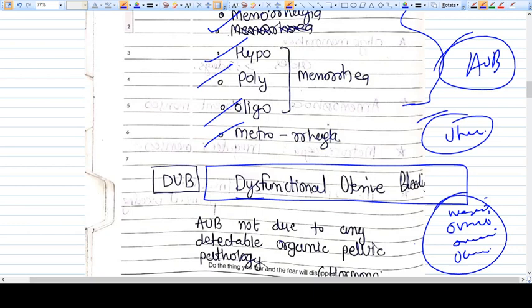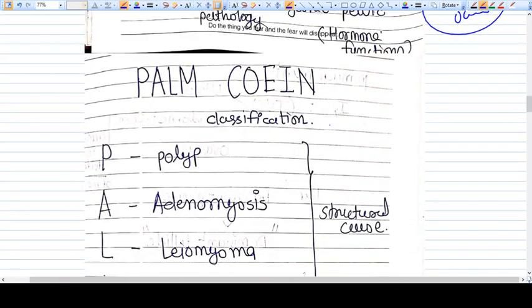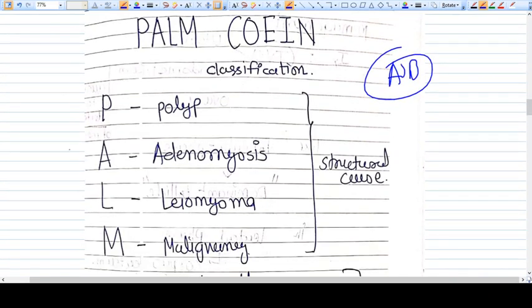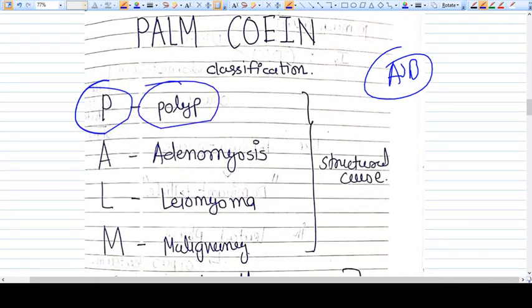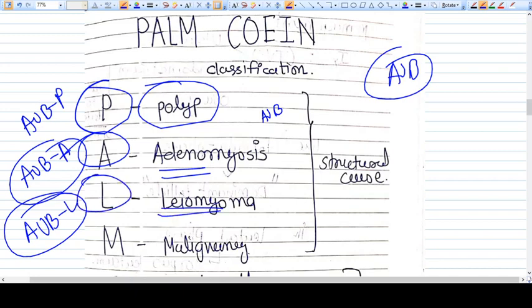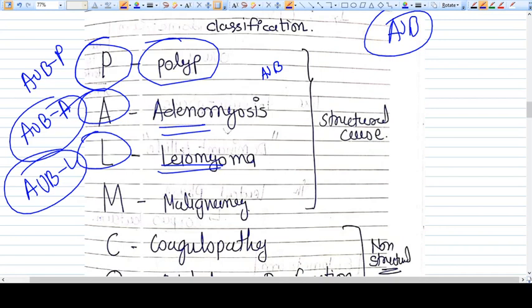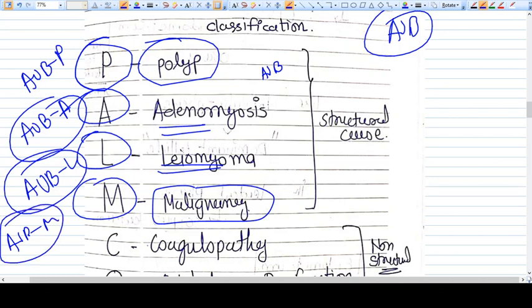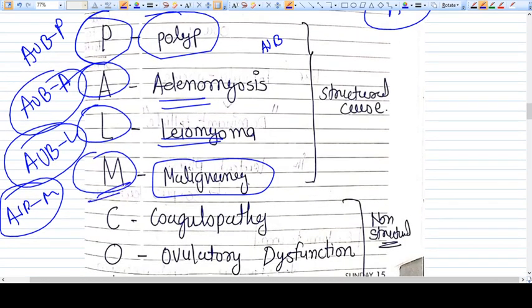There is a classification called PALM-COIN classification for AUB. It's very easy if you remember PALM: P means polyp, the polyp is a reason for abnormal uterine bleeding called AUB-P. A means adenomyosis, the bleeding is due to adenomyosis. L is leiomyoma, and M is malignancy - AUB-M due to some malignancy, endometrial carcinoma, or even benign endometrial hyperplasia.